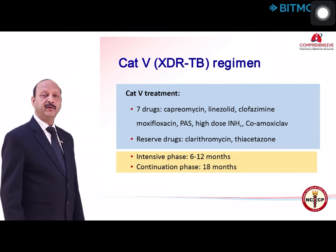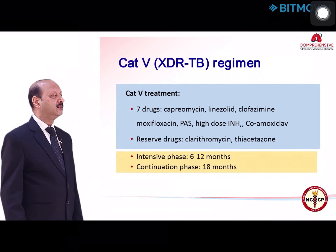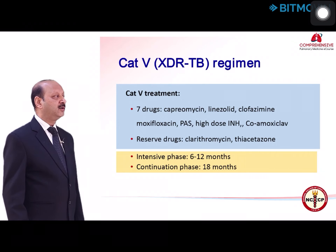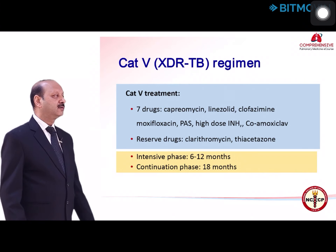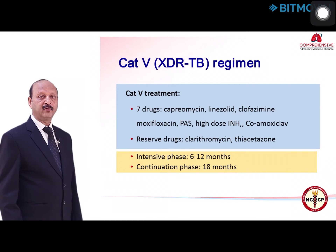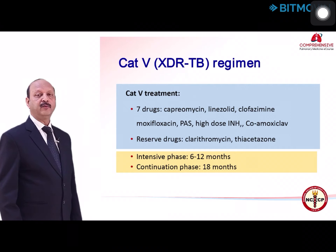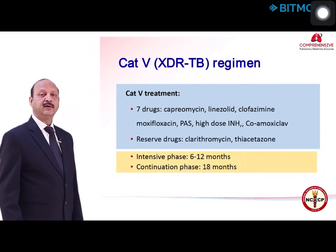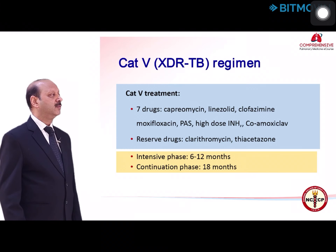For XDR-TB, we have a national guideline regimen called Category 5, which has 7 drugs including capreomycin, linezolid, clofazimine, moxifloxacin, PAS, high-dose INH, and co-amoxiclav. The reserve drugs in the national guideline include clarithromycin and thiacetazone, but this is being revised and clarithromycin is being removed. Depending on DST pattern, one can choose which drugs to give. The intensive phase duration is 6 to 12 months depending on sputum culture conversion, and the continuation phase is 18 months.